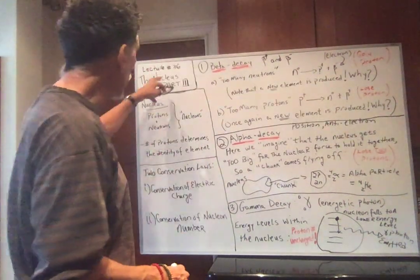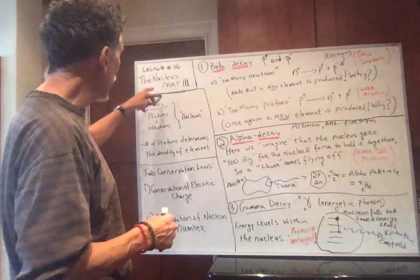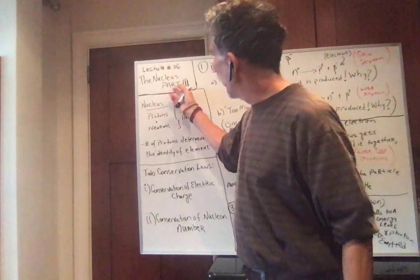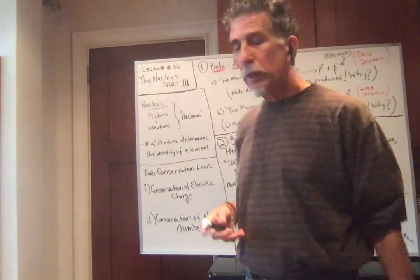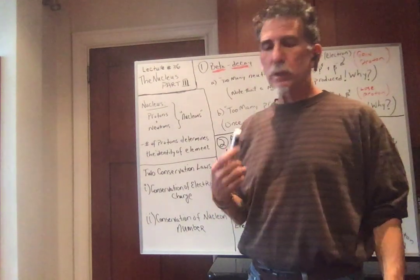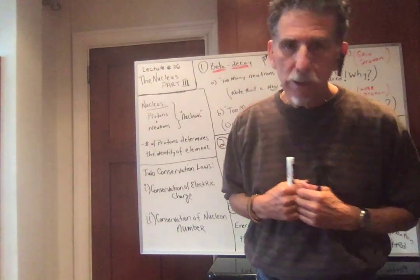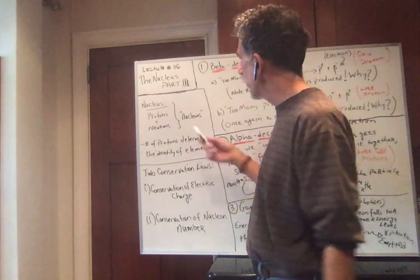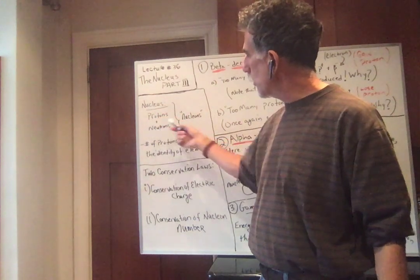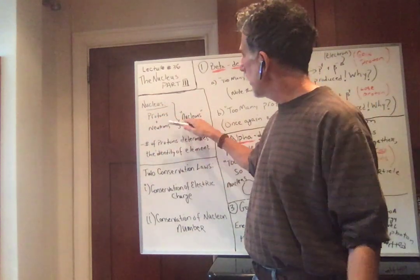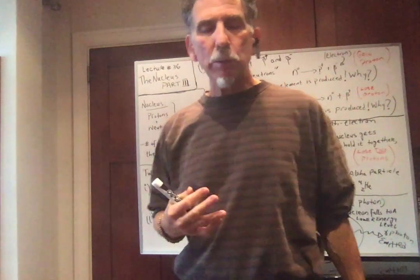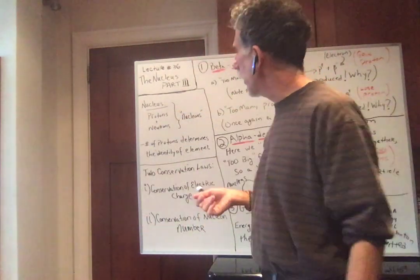Hello, and welcome to lecture number 36, where we continue our discussion of the nucleus — nucleus part three. In the last video, we discussed the fact that we are stardust, we are golden. The nucleus is made of protons and neutrons; collectively, these objects are called nucleons. Any particle found within the nucleus is called a nucleon.